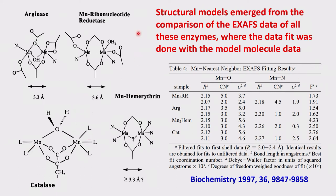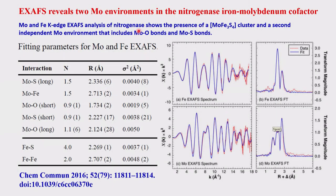Let us look at another example: the molybdenum center in the enzyme nitrogenase. The iron-molybdenum cofactor is present in that. This is the EXAFS and part of the XANES data. Using all these, the structure has been derived with respect to both molybdenum and iron. The oscillation spectrum is shown for the Fe K-shell and for the Mo K-shell, and correspondingly the Fourier transform spectra for iron and molybdenum — allowing study of both metal centers and fitting.